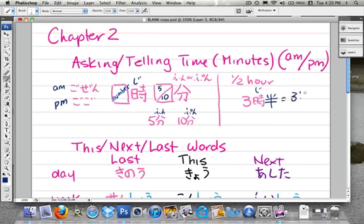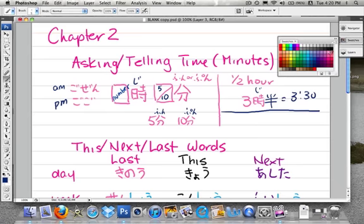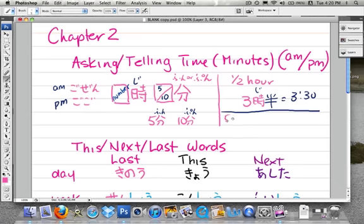And so that equals 3:30 as well. The other thing that we looked at in this chapter was how to say 5 or 10 minutes before an hour. And in doing that, we use the word for before, mae. So for example, we would have sanji—if we wanted to say 2:55 for example, that would be sanji go-fun mae. And mae would be the word that we are looking for.